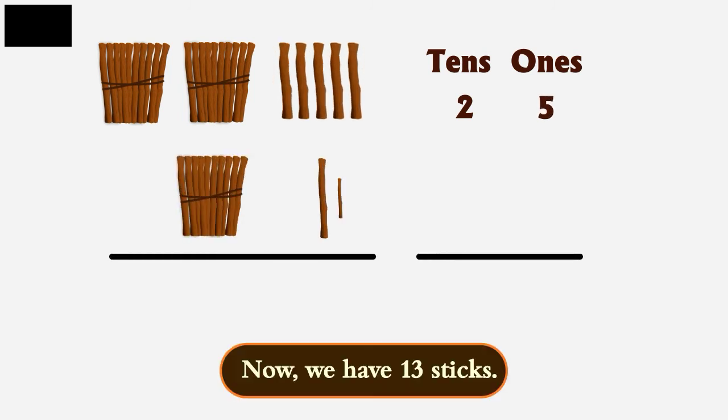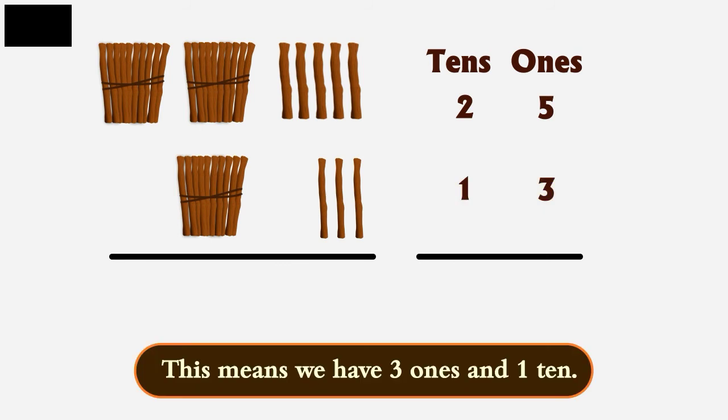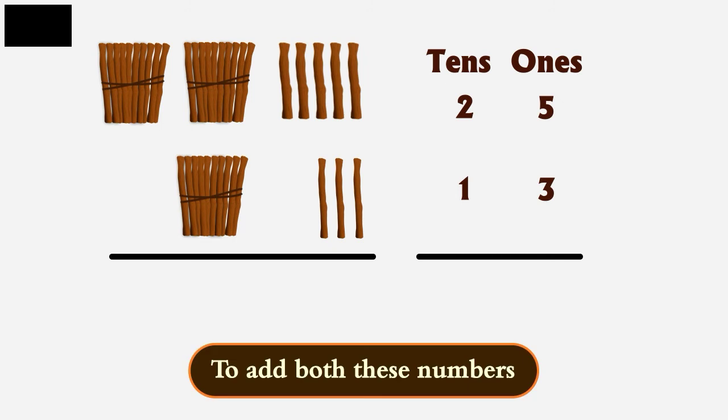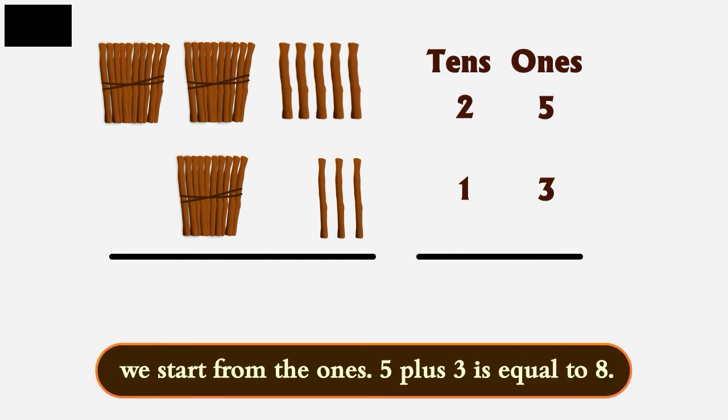Now, we have 13 sticks. This means we have 3 ones and 1 ten. To add both these numbers, we start from the ones.